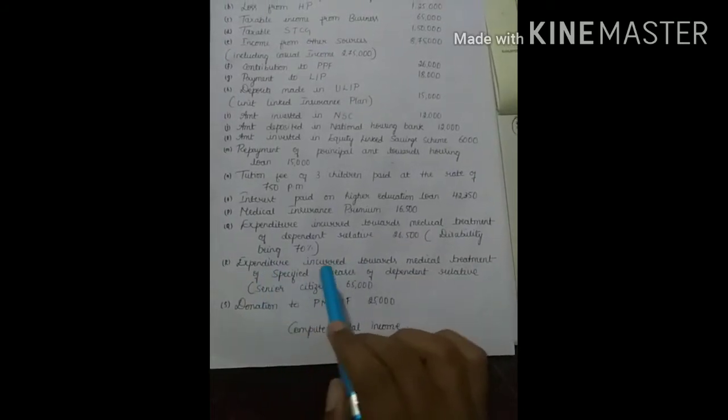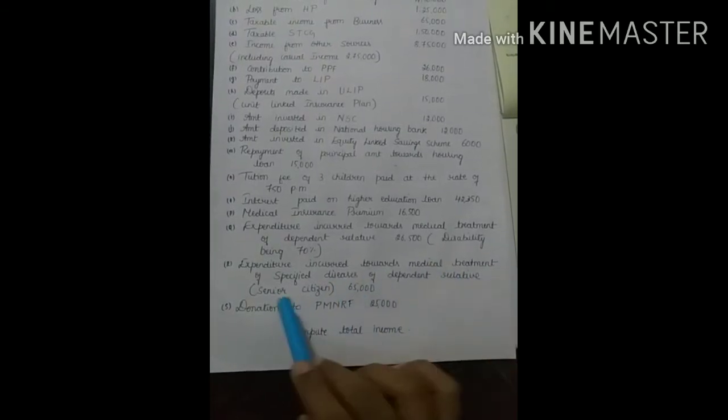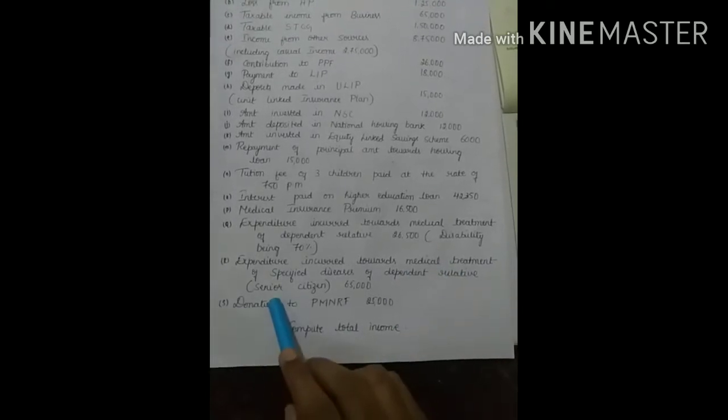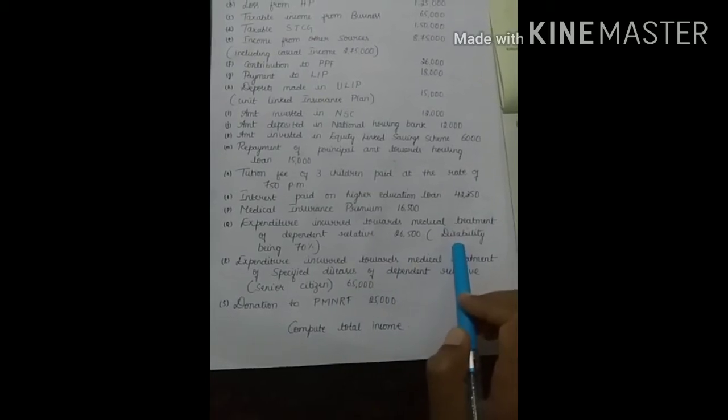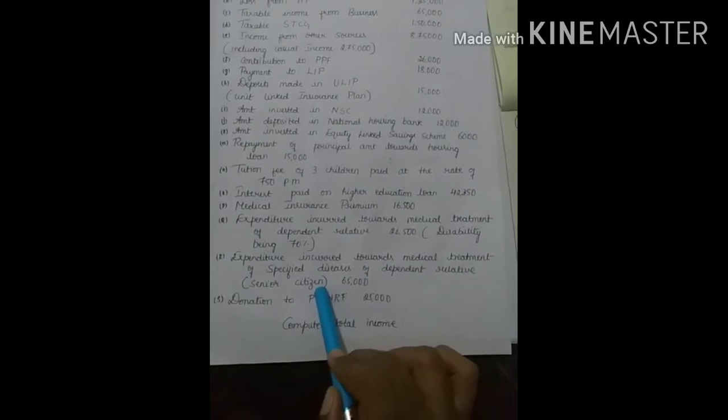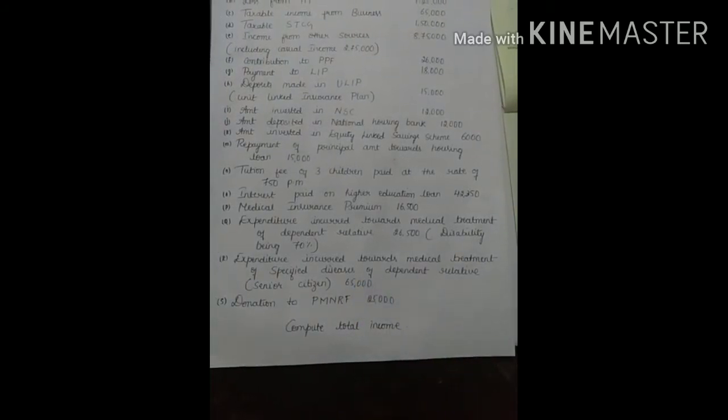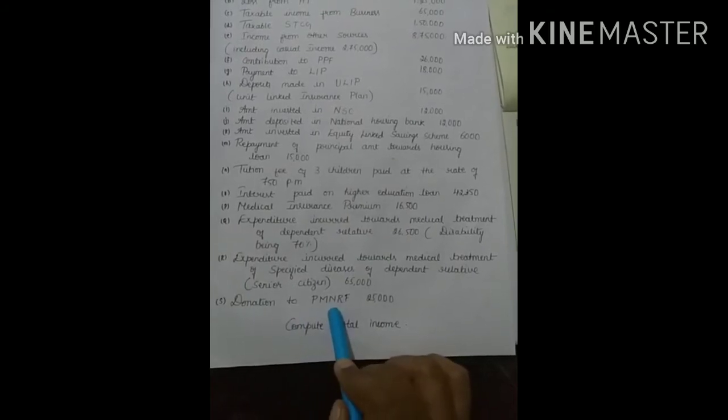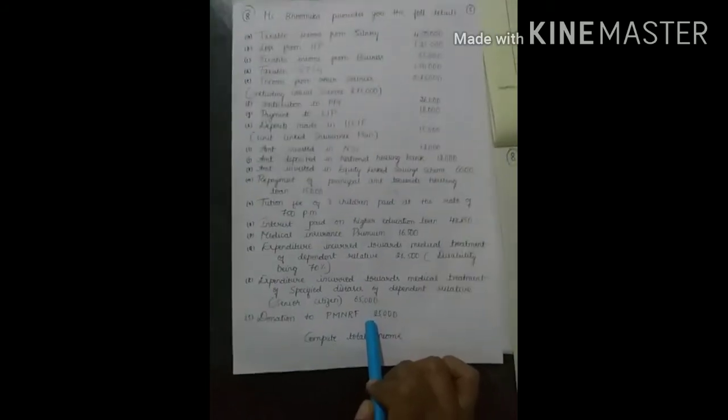Next is expenditure incurred towards medical treatment of specified diseases of dependent relative. This is the dependent relative which is specified disease, disability. Specified disease comes under 80DDB. So, 65,000 amount is given here. Next is donation to PMNRF 25,000, 100% deductions we get. So this is the problem. We have to compute total income. Let's begin to solve the problem.